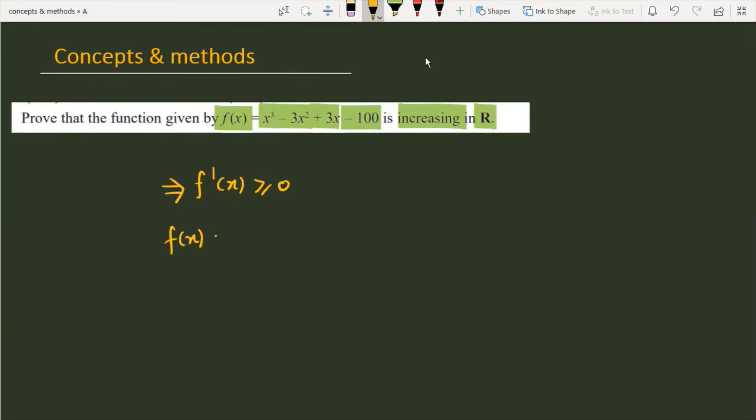We have the function f(x) = x³ - 3x² + 3x - 100. If we differentiate the given function, we will get the derivative.